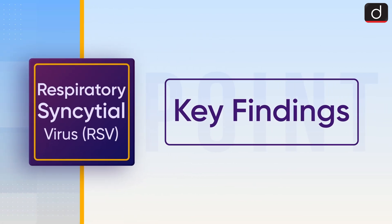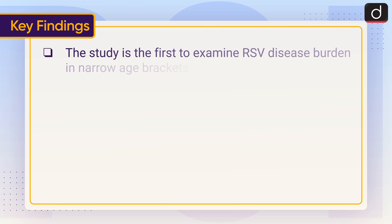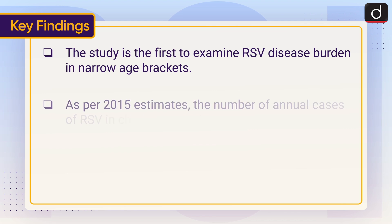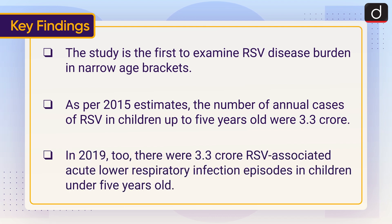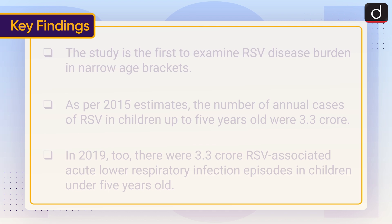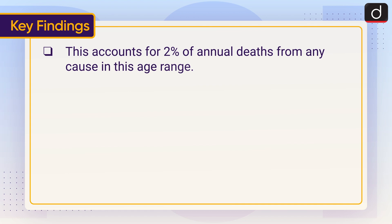Now let's have a look at its key findings. The study is the first to examine RSV disease burden in narrow age brackets. As per 2015 estimates, the number of annual cases of RSV in children up to five years old were 3.3 crore. In 2019 too, there were 3.3 crore RSV-associated acute lower respiratory infection episodes in children under five years old. This accounts for 2% of annual deaths from any cause in this age range.